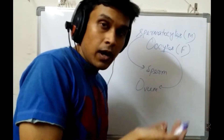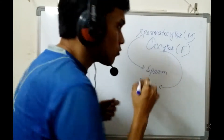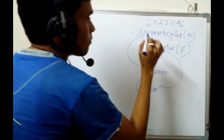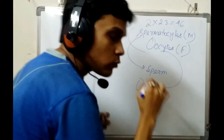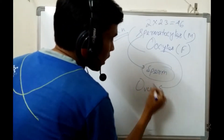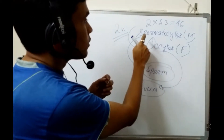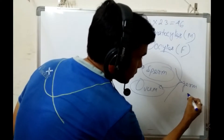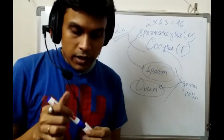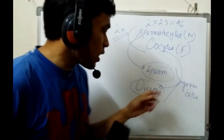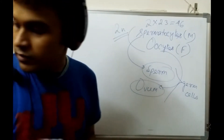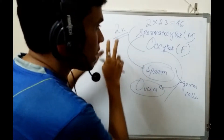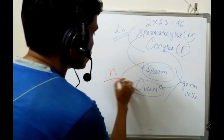As mentioned in an earlier class, the human body contains 2N chromosomes — 2 times 23, which equals 46 chromosomes. Spermatocytes and oocytes also contain 2N chromosomes, but the difference lies in sperm and ovum: sperm and ovum contain only N number of chromosomes.